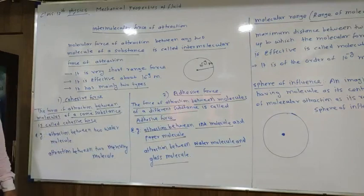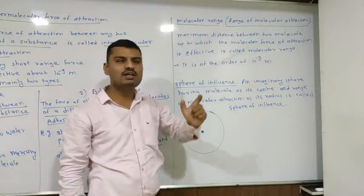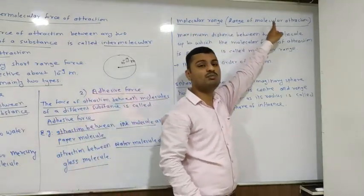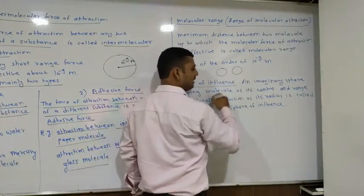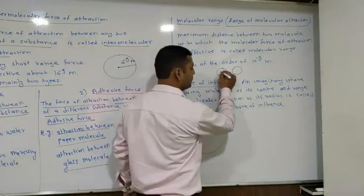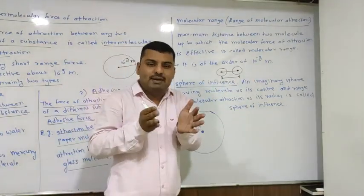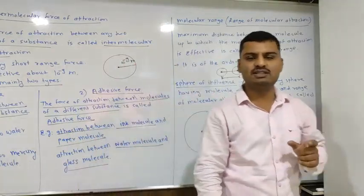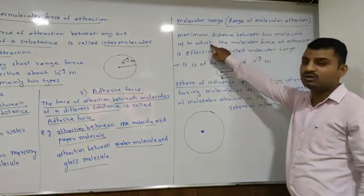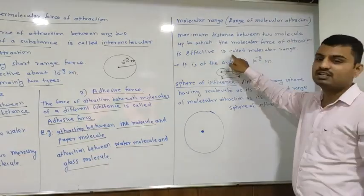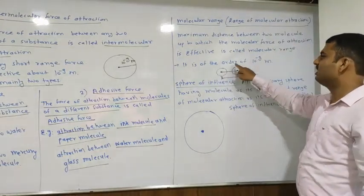Next is the molecular range, also called the range of molecular attraction. The maximum distance between two molecules up to which the molecular force of attraction is effective is called the molecular range. It is of the order of 10 raised to minus 9 meters.